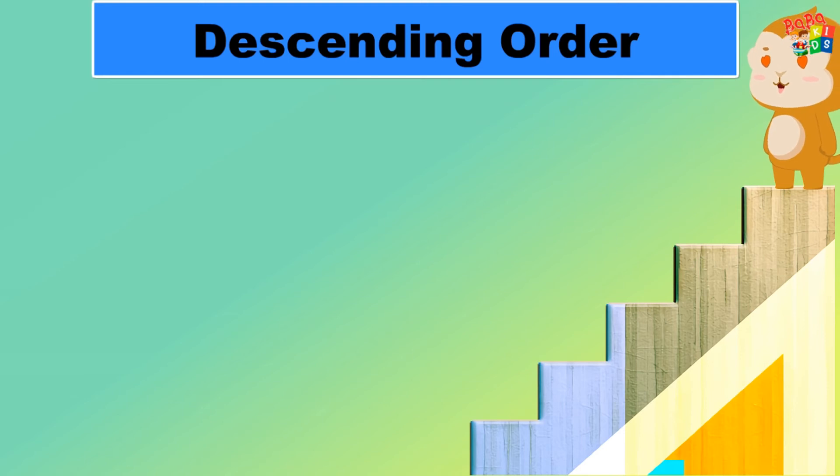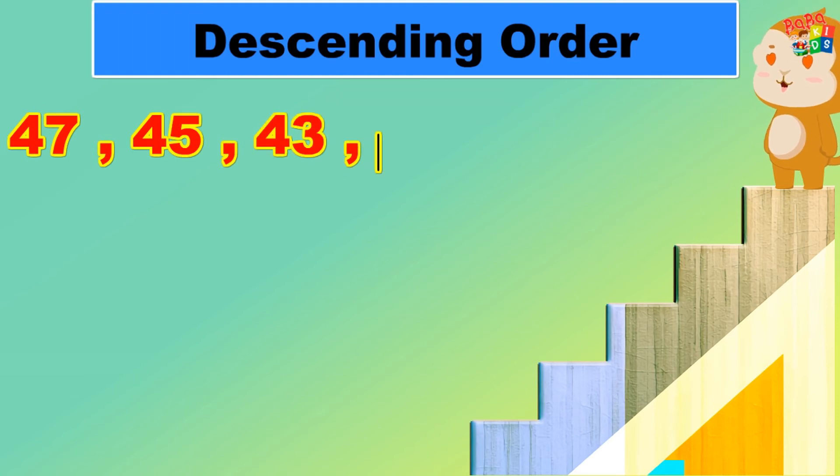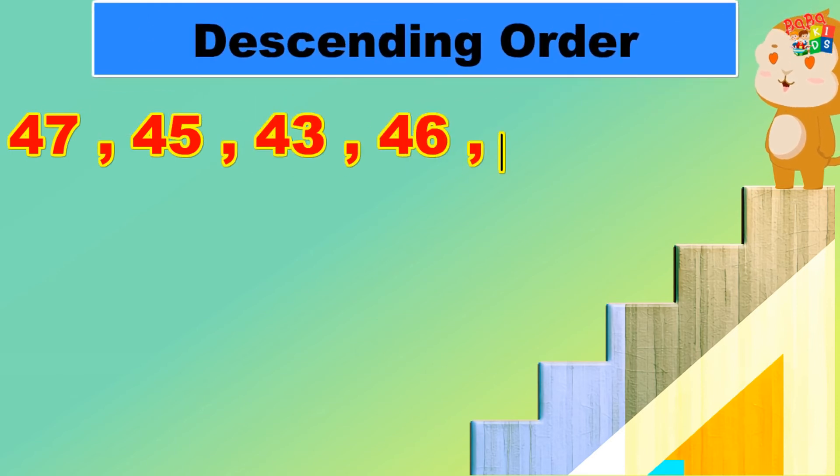Then in descending order: 47, 45, 43, 46, 44. Children, which number do you think will come on top? Yes, the greatest number will come on top. So the greatest number is 47.